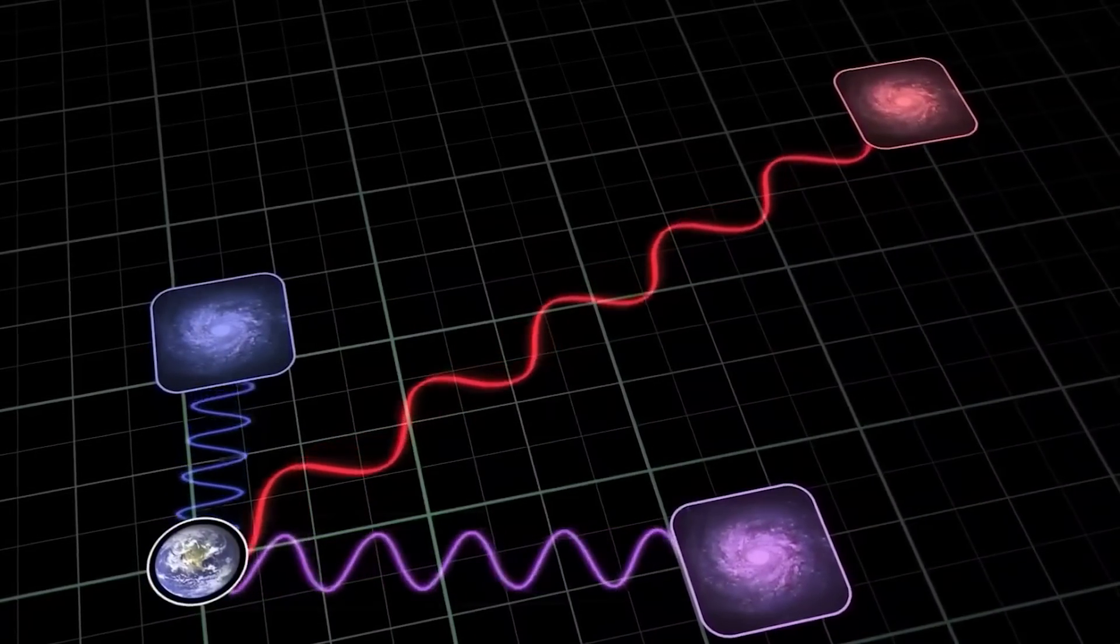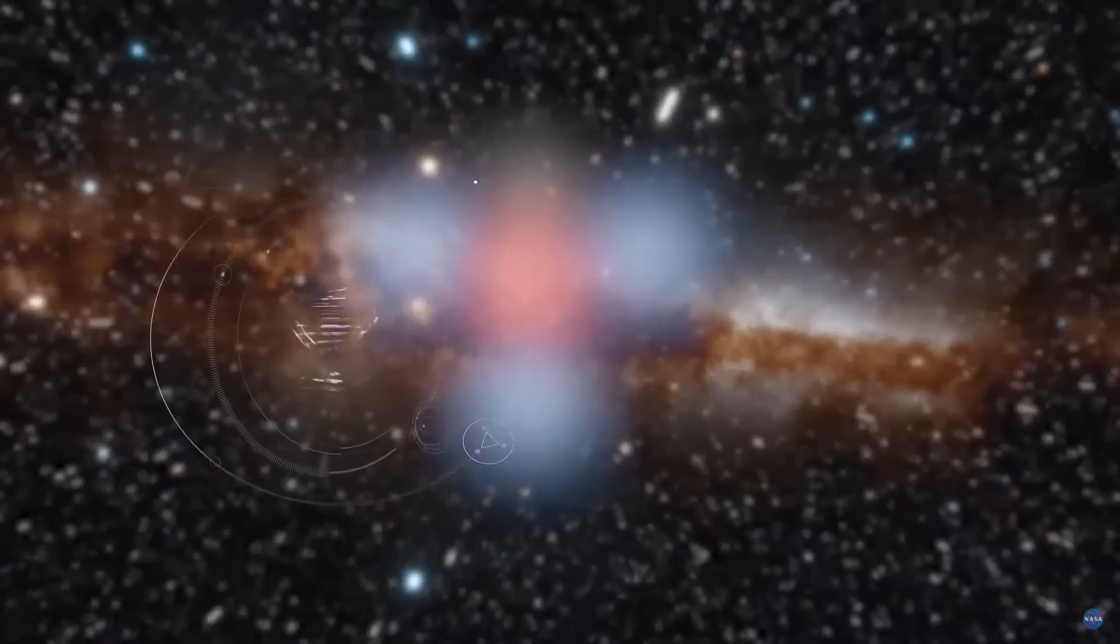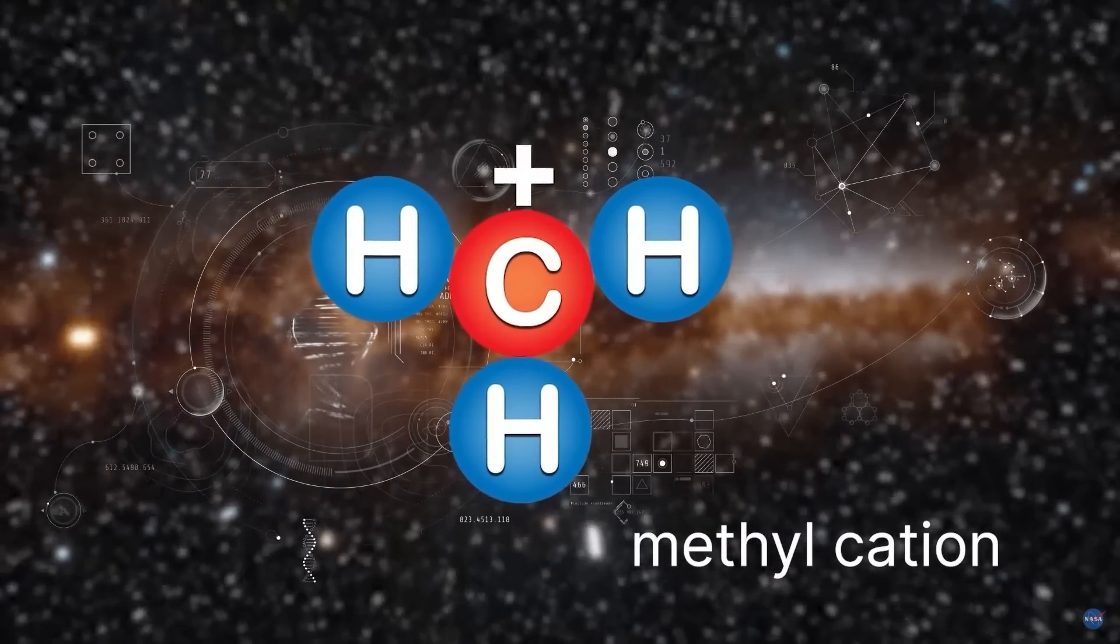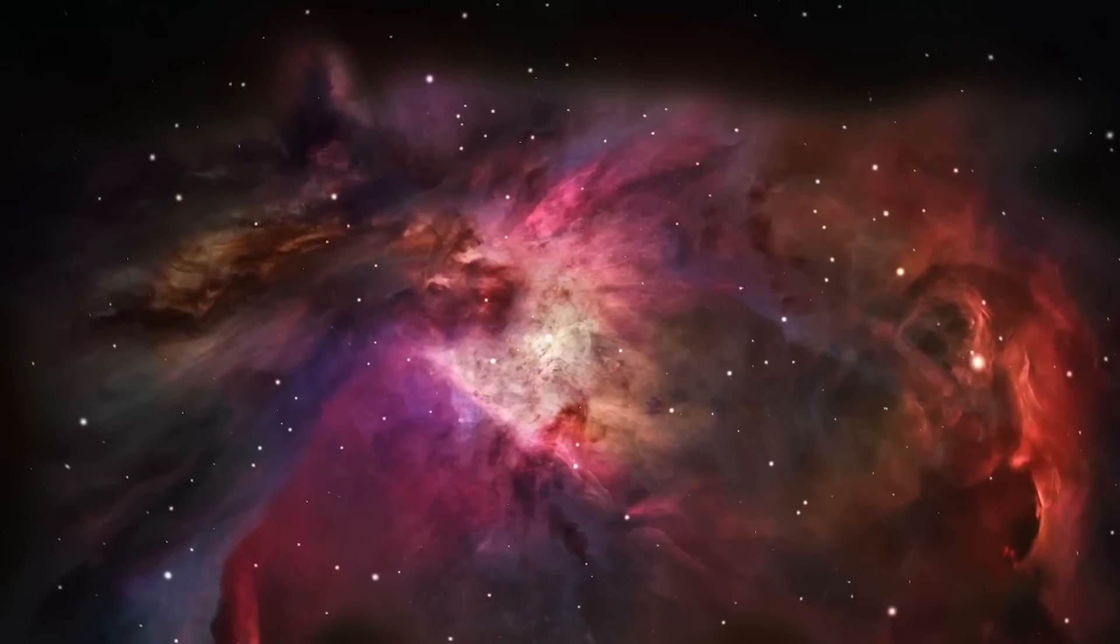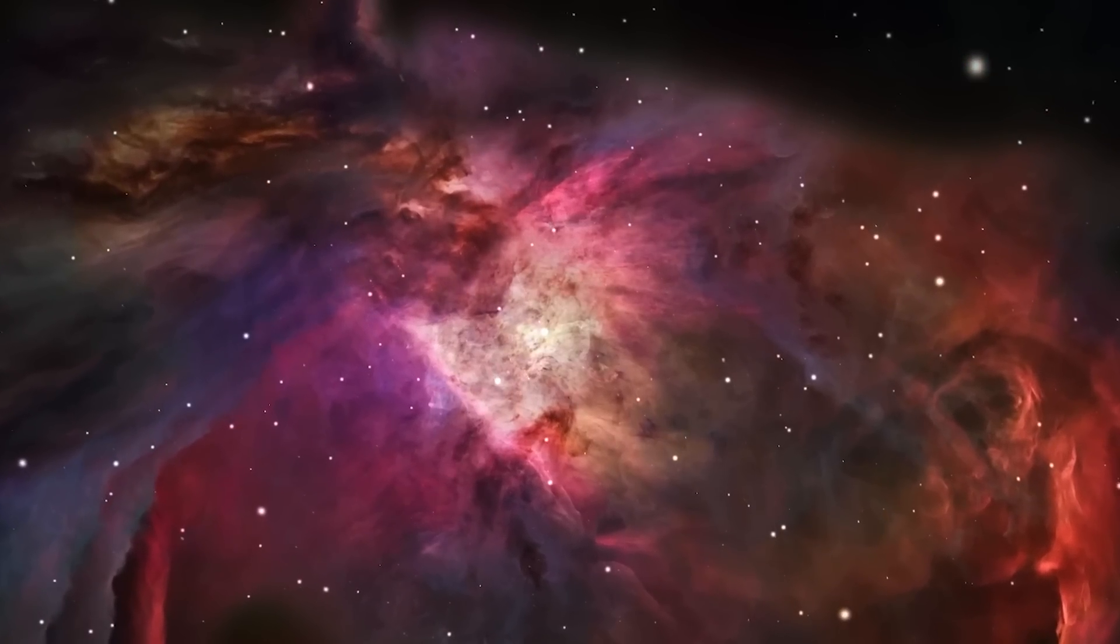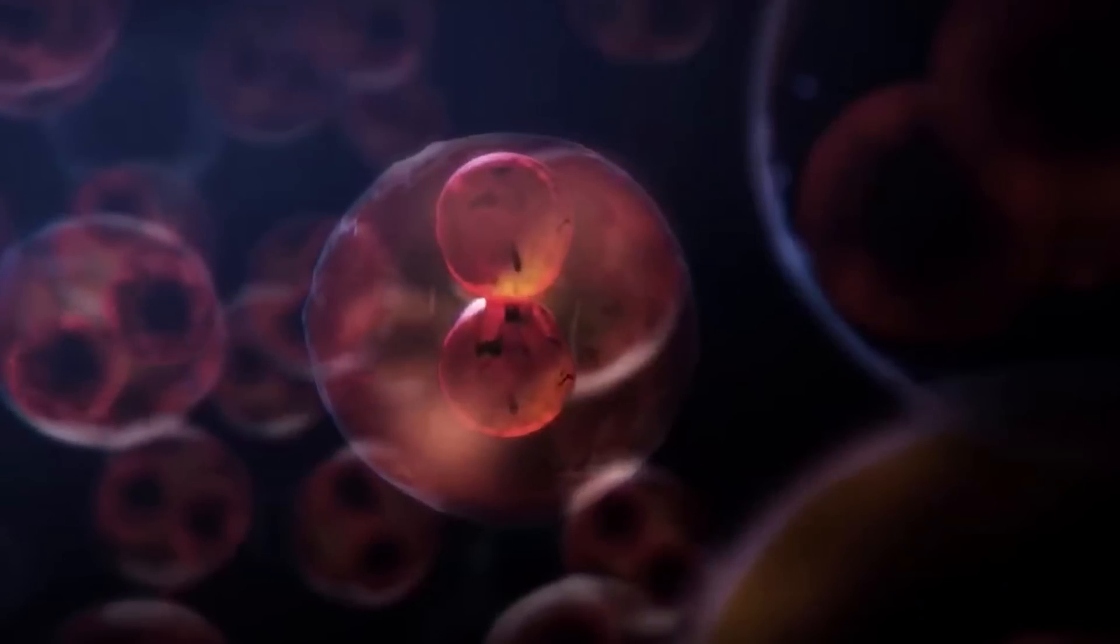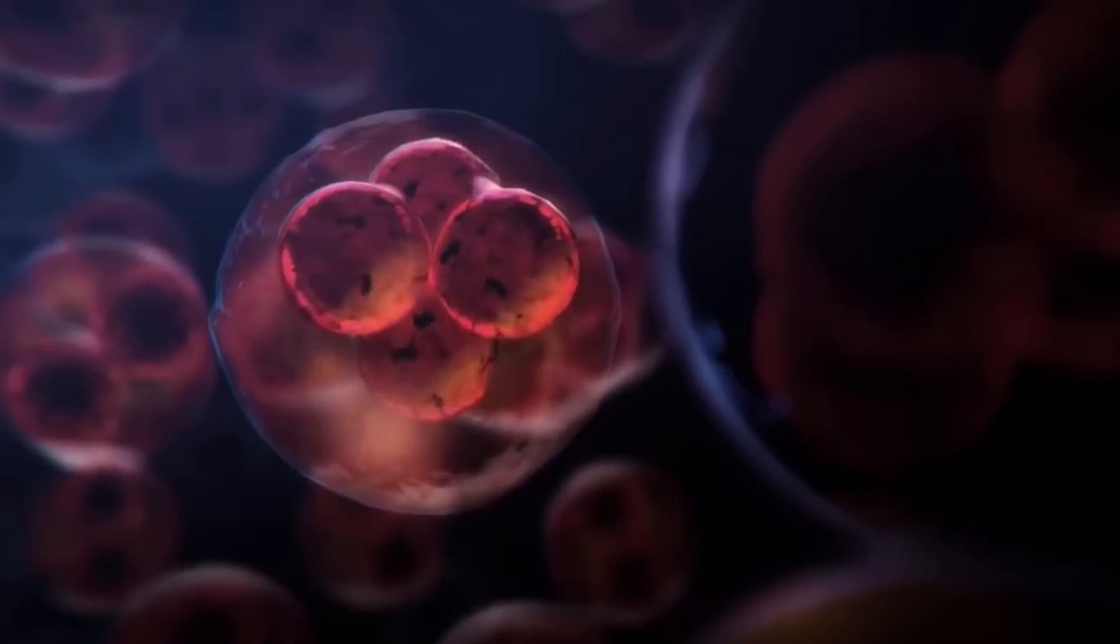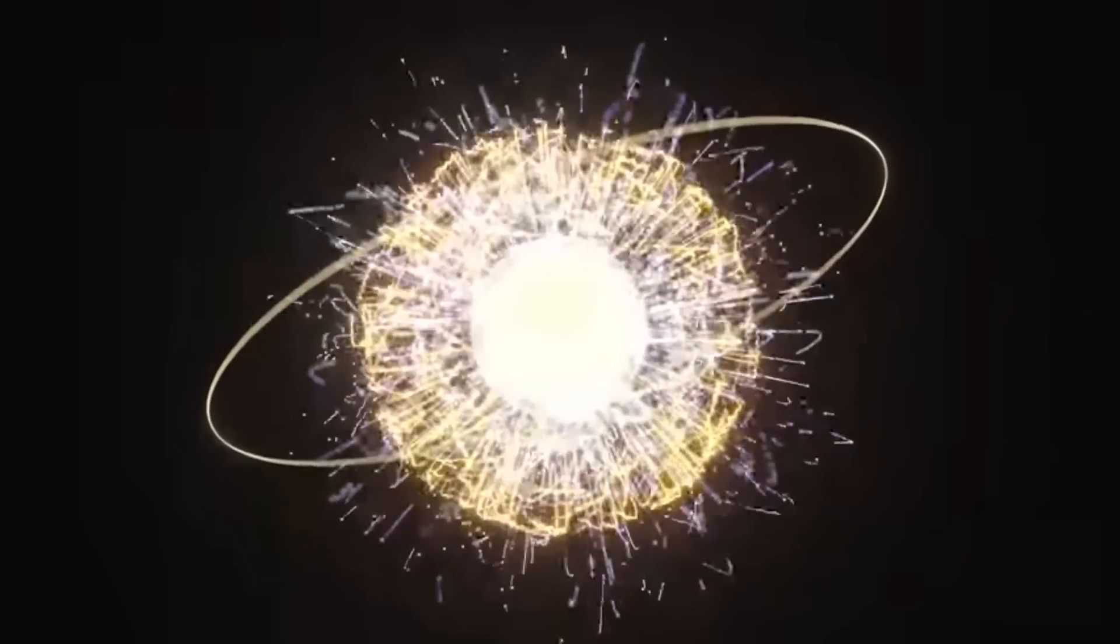In addition, it has detected for the first time the presence of a crucial molecule called a methyl cation in a planet-forming disk around a young star in the Orion Nebula. This molecule plays an important role in interstellar organic chemistry, and its detection confirms its relevance in the formation of complex carbon-based molecules. The discovery also provides insight into how organic molecules can form and evolve in protoplanetary disks under the influence of ultraviolet radiation.